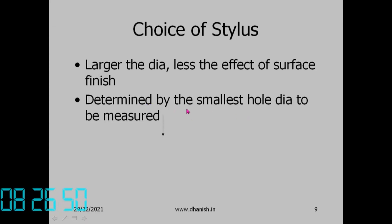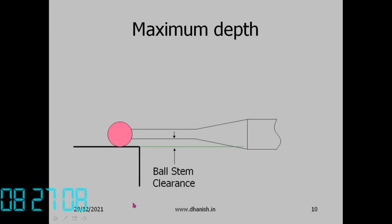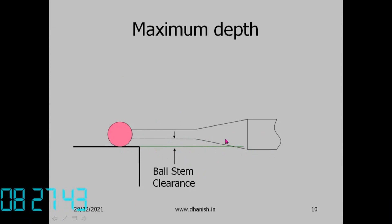Choose the stylus based on the smallest hole, then select diameter accordingly. Stylus extension depends on the maximum depth to be probed. When using small-diameter styluses at depth, the stem can hit the workpiece and trigger a false reading. So ball-stem clearance must be kept in mind, and a different stylus type may be needed.